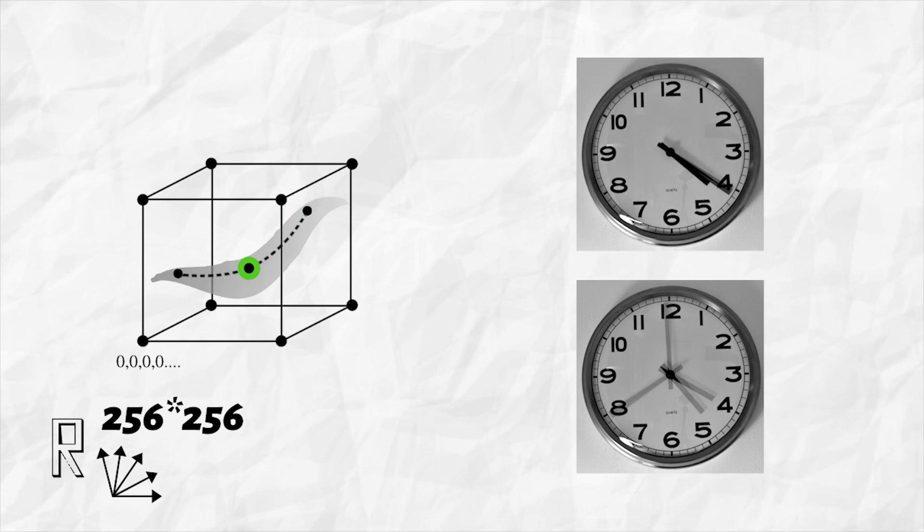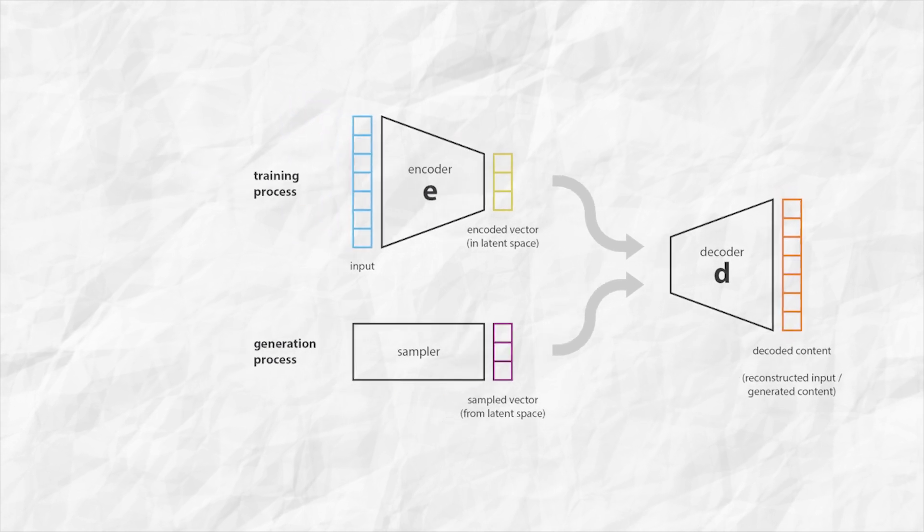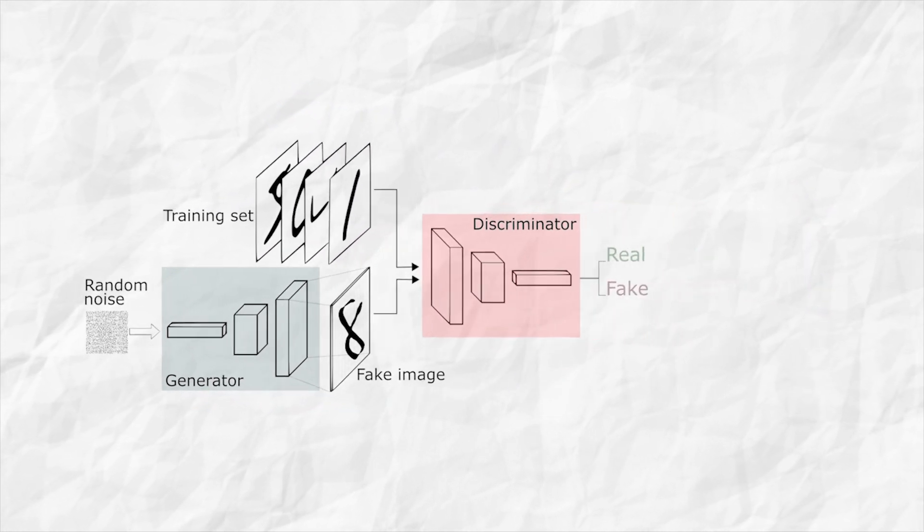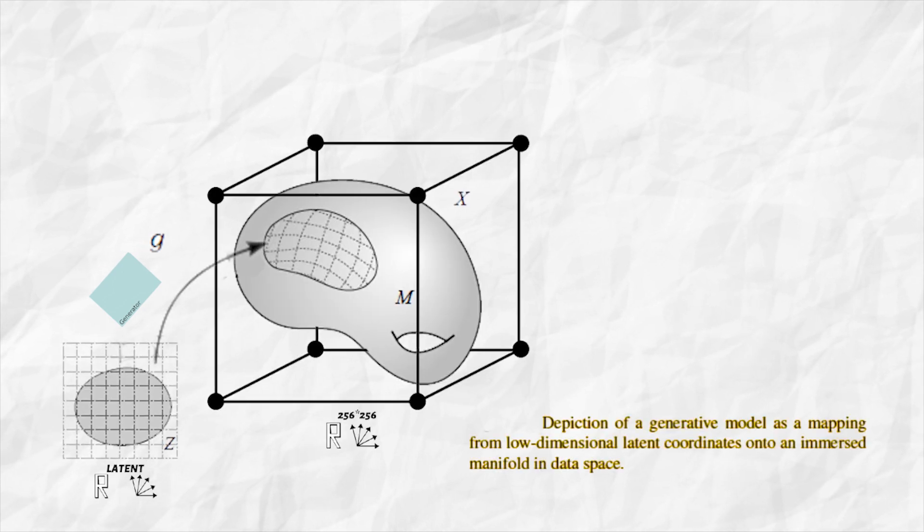By modelling the manifold, the computer can understand the image better. Machine learning algorithms like VAEs and GANs learn to approximately model image manifolds using large scale image collection. These models involve learning a mapping from a low dimensional latent space to a high dimensional pixel space.